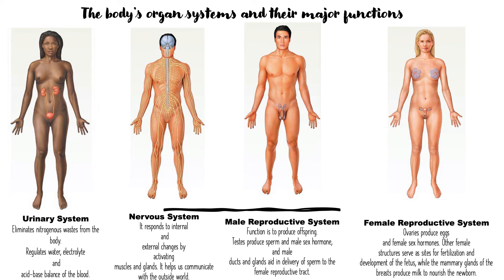The nervous system is important because it helps communicate with the outside world. It helps you determine whether you're cold or hot and what's going on in the external environment. It responds to internal and external changes by activating muscles and glands.